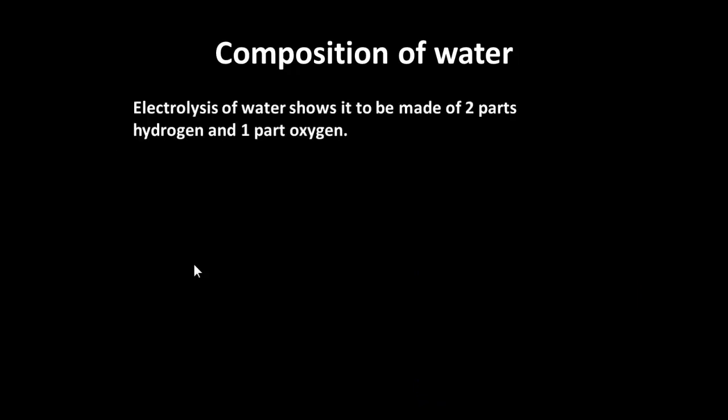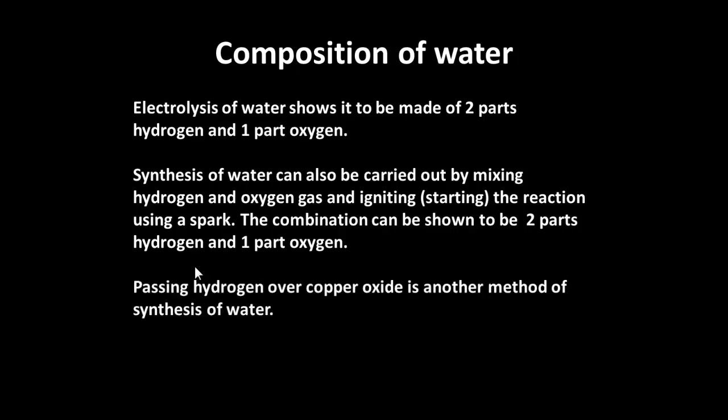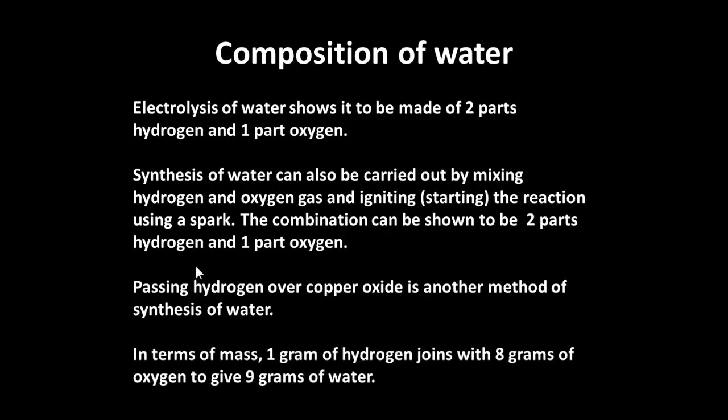Electrolysis of water shows it's made of two parts hydrogen, one part oxygen. We could synthesize water by igniting or burning hydrogen and oxygen gas together, and that would show that the gases combine in the ratio of two parts hydrogen to one part oxygen. You could also pass hydrogen over copper oxide to get water. The copper oxide would be reduced, the hydrogen would be oxidized. In terms of mass, one gram of hydrogen joins with eight grams of oxygen, and that gives nine grams of water.